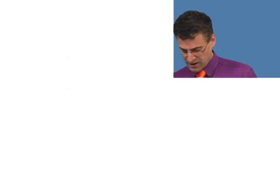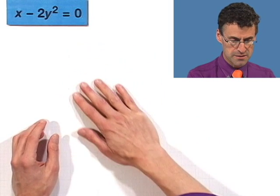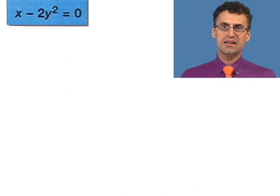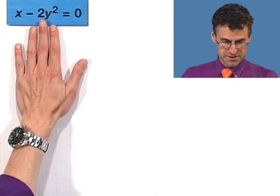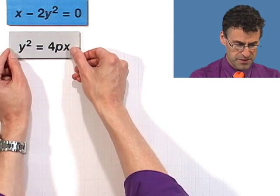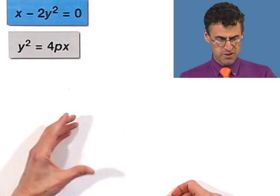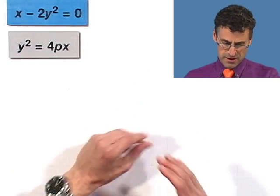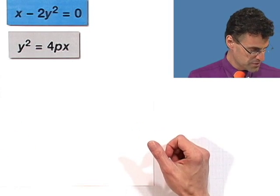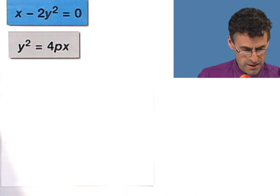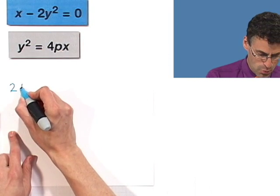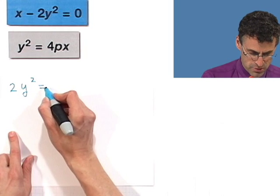Anyway, let's take a look at an example. I want to graph this parabola, x minus 2y squared equals 0. And let's do it by finding the focus and then finding the directrix. Notice that this is of the form a y squared thing. So I want to solve this for y squared. This is going to be one of those parabolas that opens up either this way or that way.